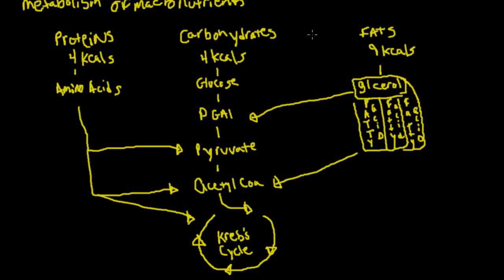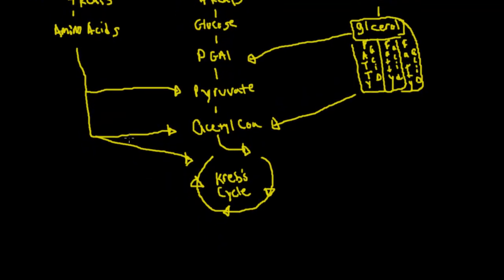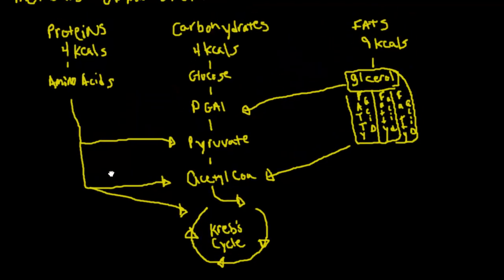So there's the macronutrients that you would use for metabolism. You've got proteins, carbohydrates, and fats. If you ever look on the back of your nutritional facts on a food product, that's what you're going to see. It's going to break it down into proteins, carbohydrates, and fats.